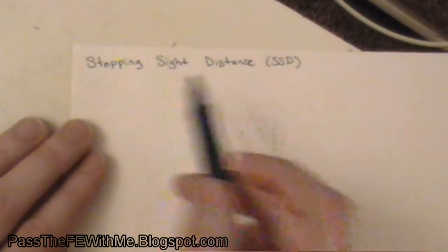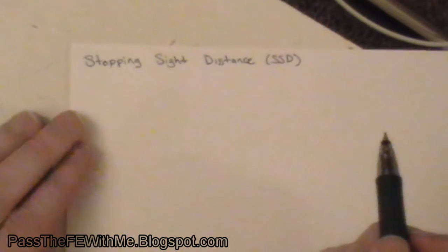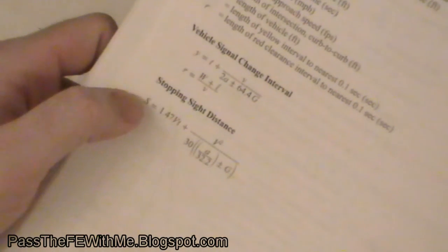So what we're talking about is stopping sight distance, or SSD. And this is, like I said, on the afternoon section, so it's worth double points. But if you pull open your Supply Reference Manual and go to page 162, you see there's this equation right here, and here's a list of definitions of the variables.